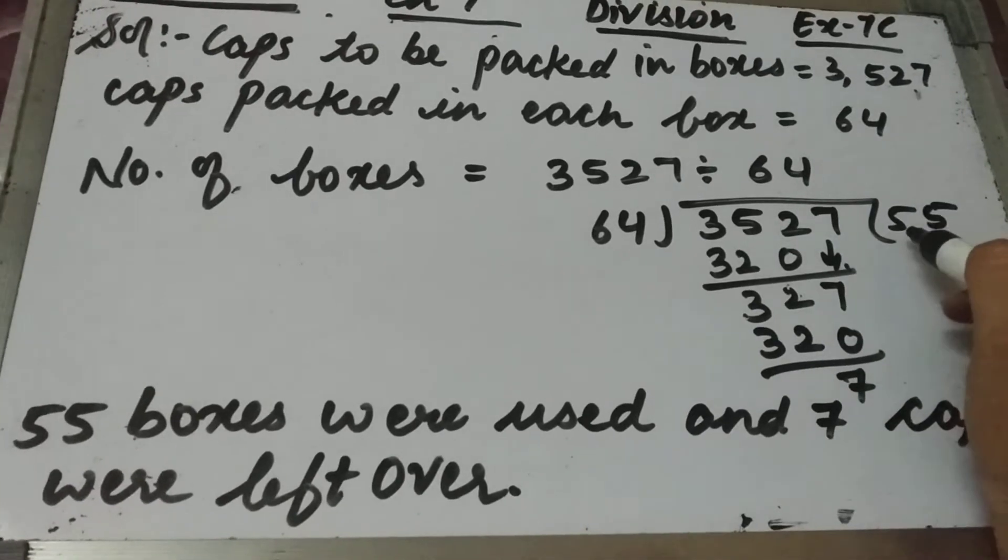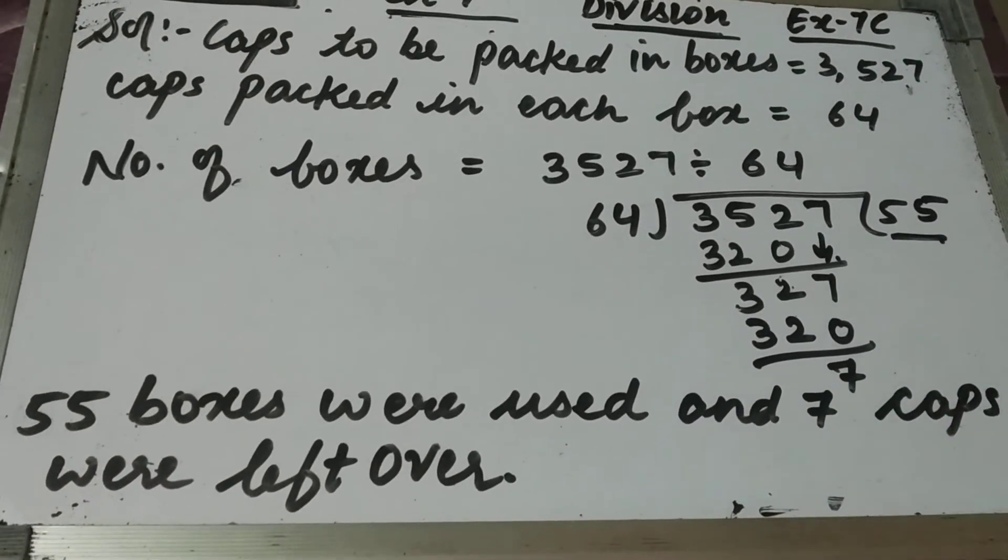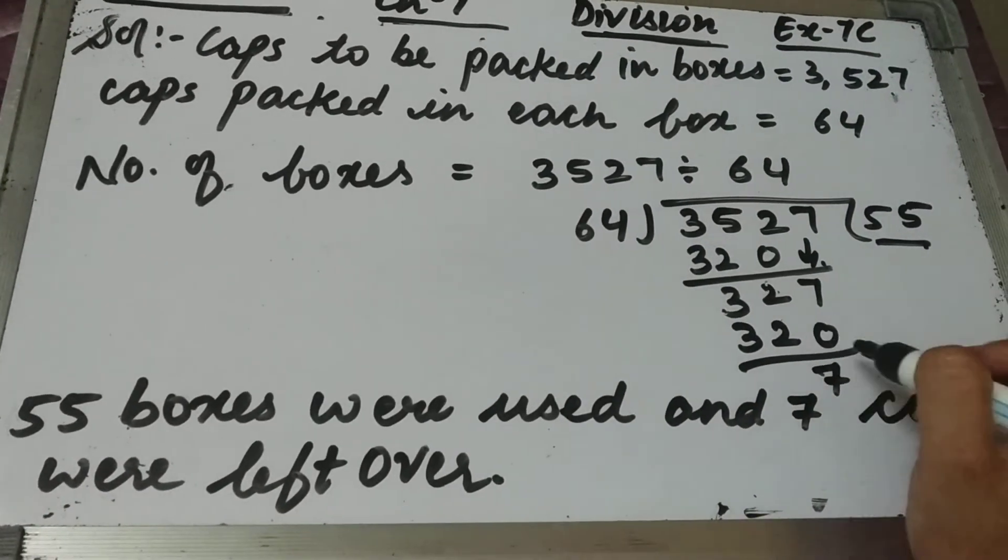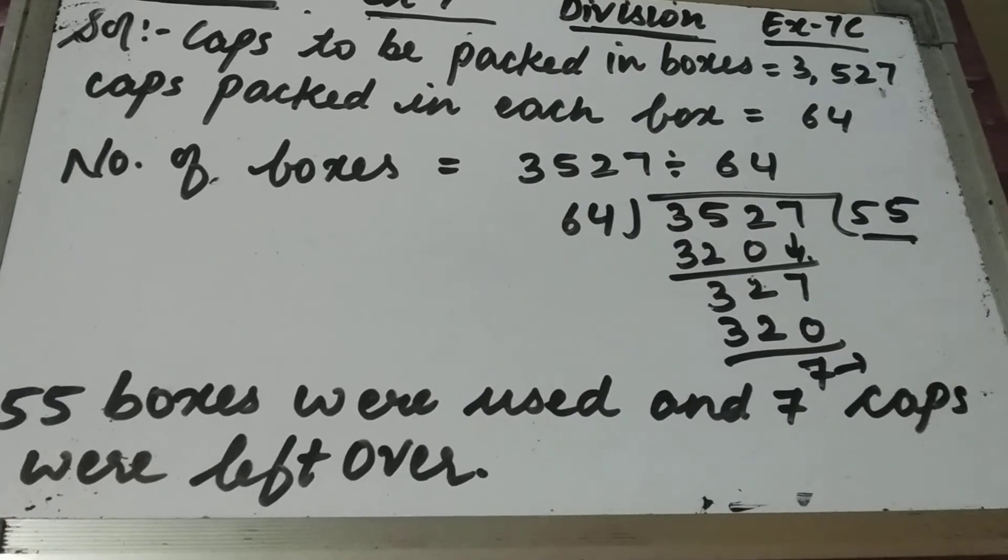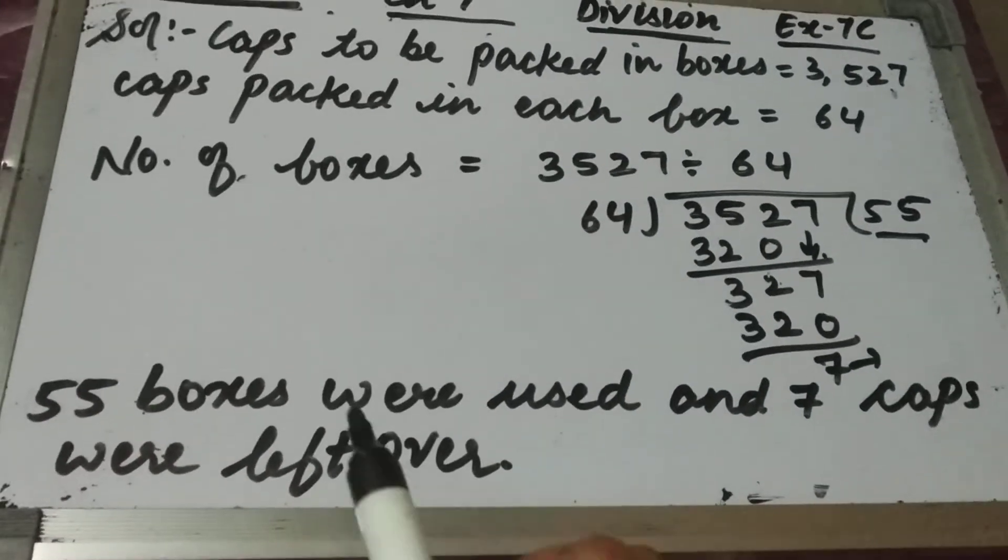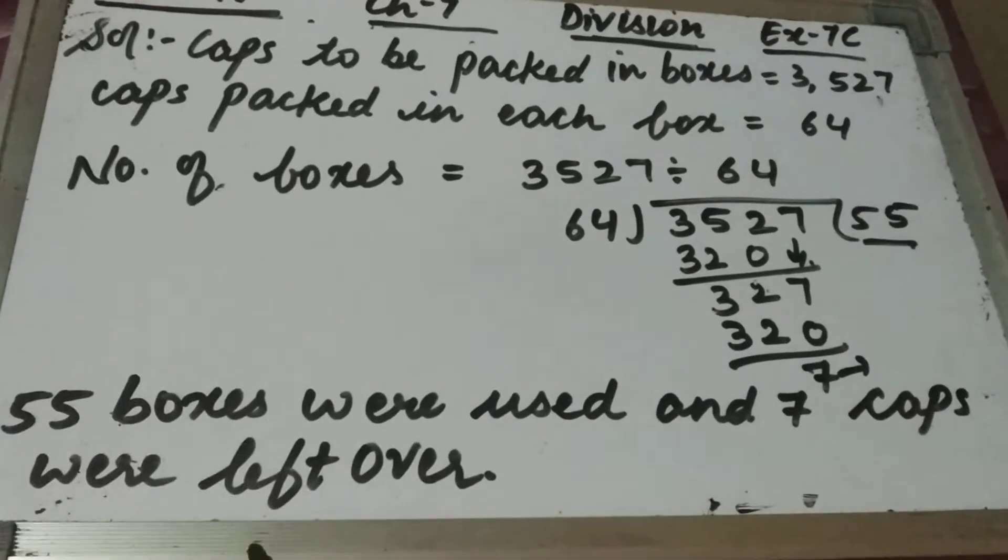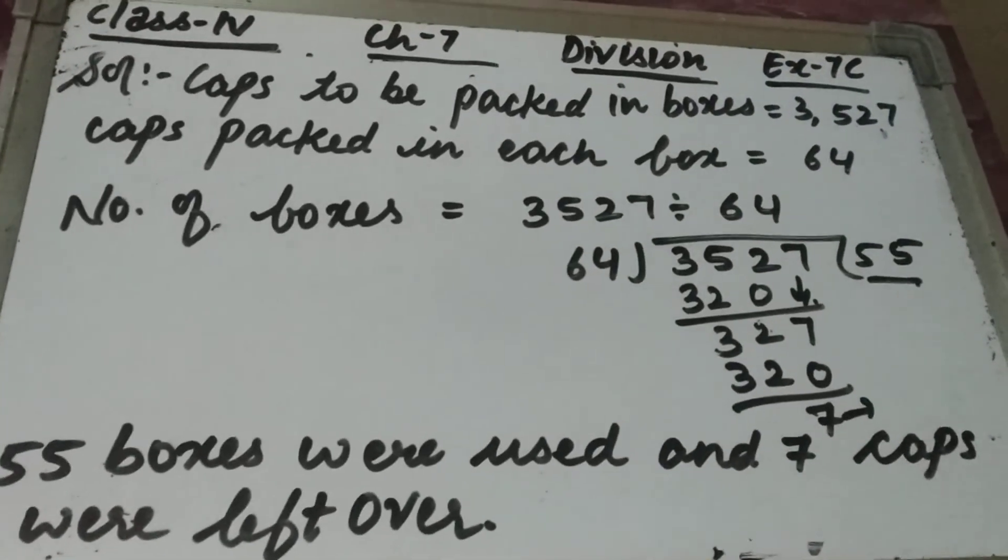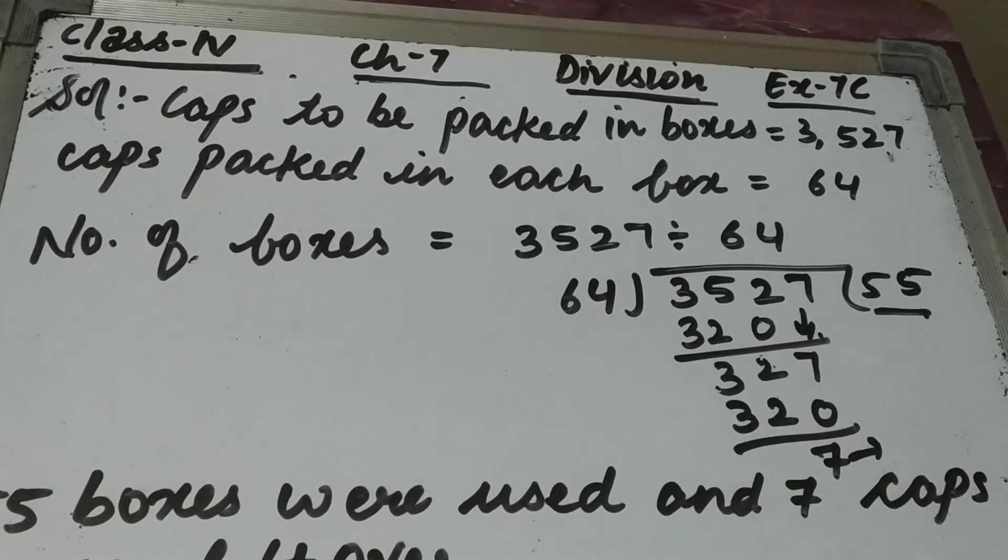So how many boxes were used to pack these caps? 55 boxes. The quotient that comes will be our number of boxes and the remainder, this 7, is the number of caps left over. So 55 boxes were used and 7 caps were left over. This is our question number 4.